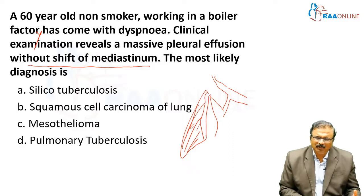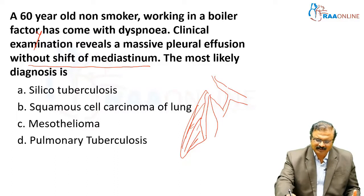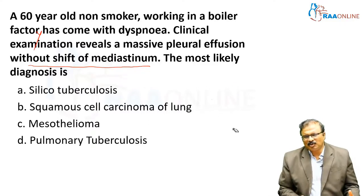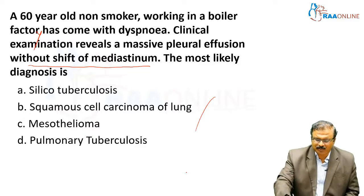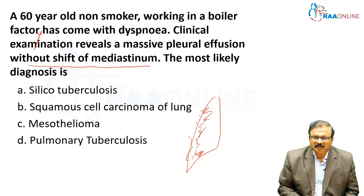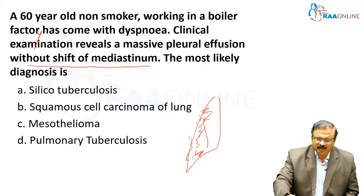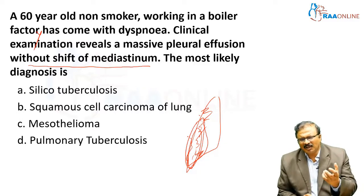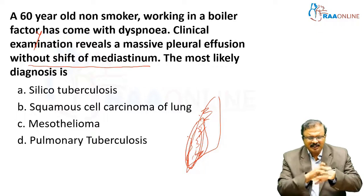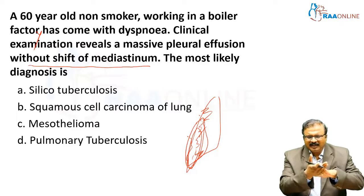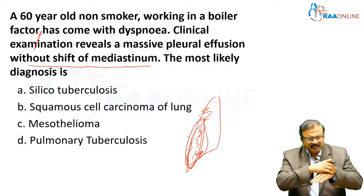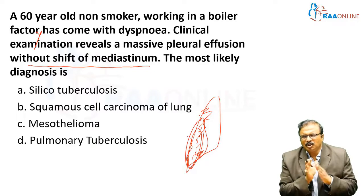What is mesothelioma? Mesothelioma is caused by asbestos-related exposure. There are pleural plaques in the initial stages, which can turn into pleural malignancy — mesothelioma. The association of mesothelioma is grade 4 clubbing, which is HPOA — hypertrophic pulmonary osteoarthropathy — where with grade 3 clubbing there is a swollen and painful wrist joint.